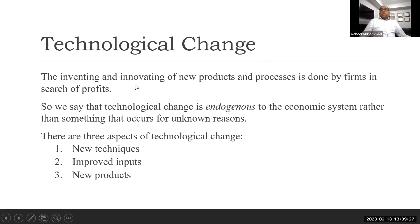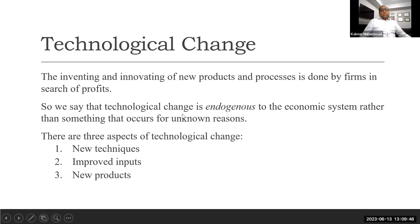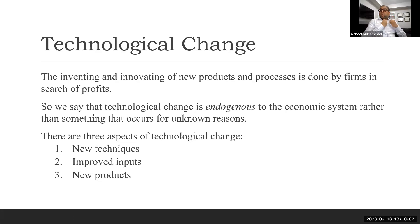How does technological change take place? There are three aspects: new techniques that change the whole system of doing business, gradual improvement of the production process, and introduction of new products. We also see that technological change is endogenous — it comes from inside the business and economic system, rather than occurring for unknown reasons. For example, when someone invented the internet, there was no idea it could be used for business, but now it is used across all business.